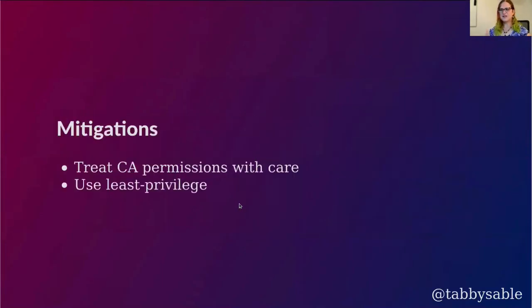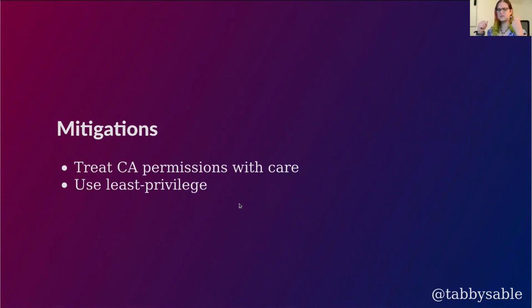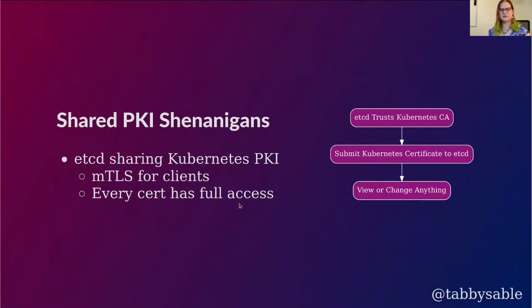So what do we learn from this? Treat your certifying authority permissions with care. Your CA configuration is an overlay over your RBAC configuration, and if your CA is willing to dispense certificates that people or services shouldn't have, then they will be able to get them. Use least privilege when configuring your CA. Specifically for Vault, you can set up roles that specify exactly what settings are allowed in the certificate, preventing access to other settings that would be inappropriate.